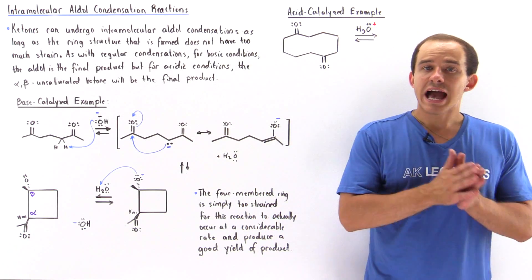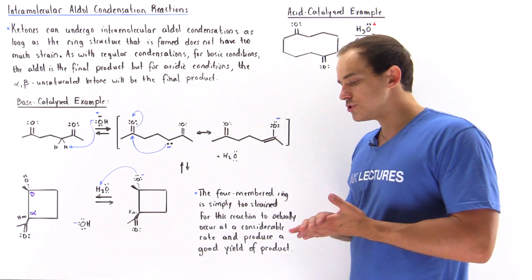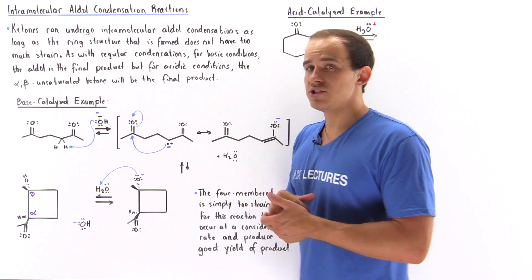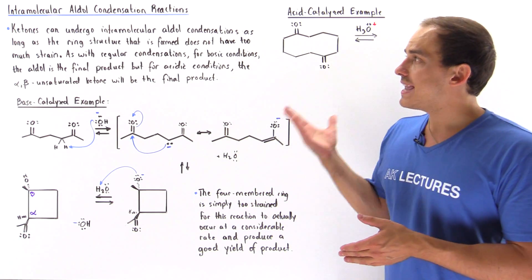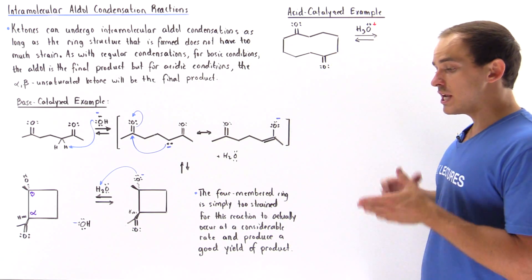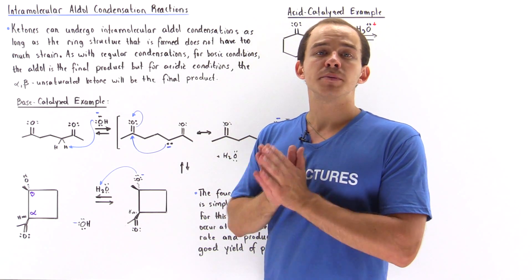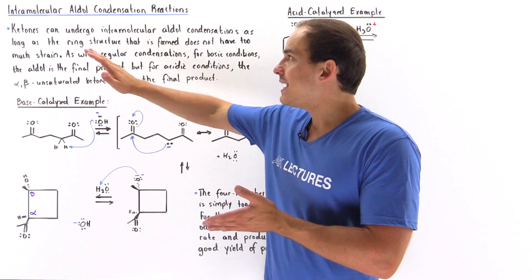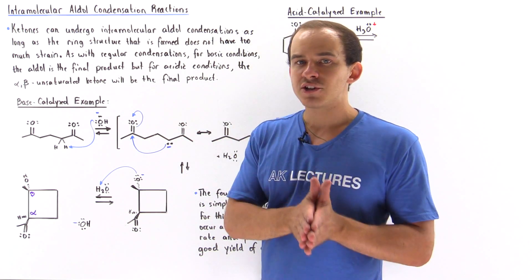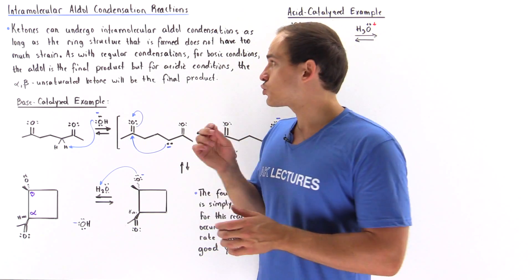Now that we've discussed the aldol condensation reaction under basic as well as acidic conditions, let's take a look at a special case known as the intramolecular aldol condensation reaction. Basically, this is an aldol condensation in which the entire reaction takes place within that particular carbonyl molecule. Ketones are carbonyls that can undergo intramolecular condensation reactions as long as the product formed isn't too strained.